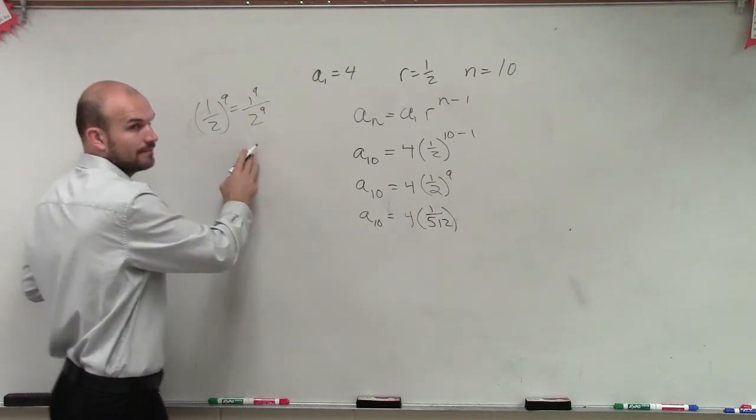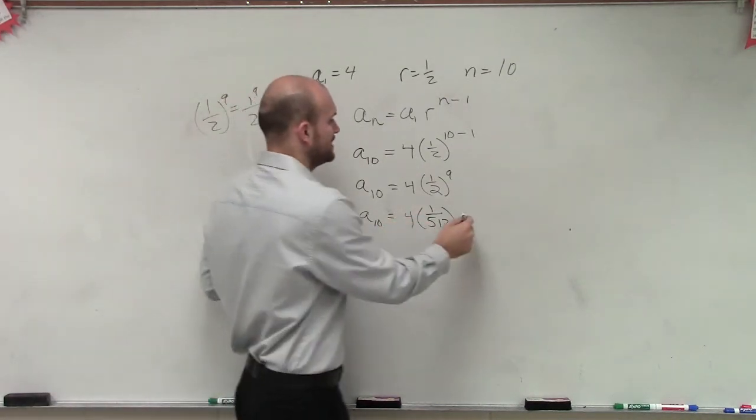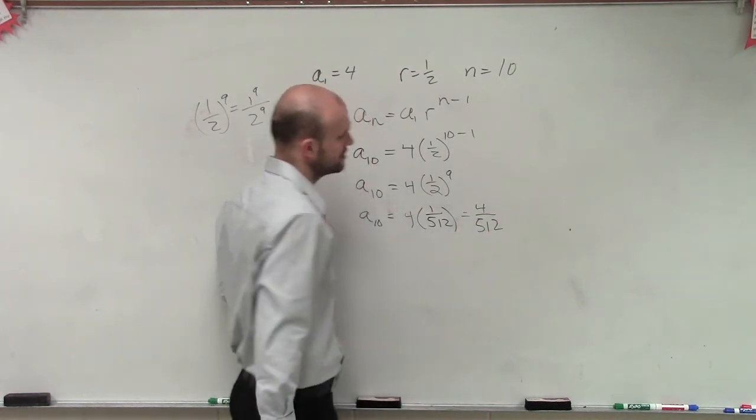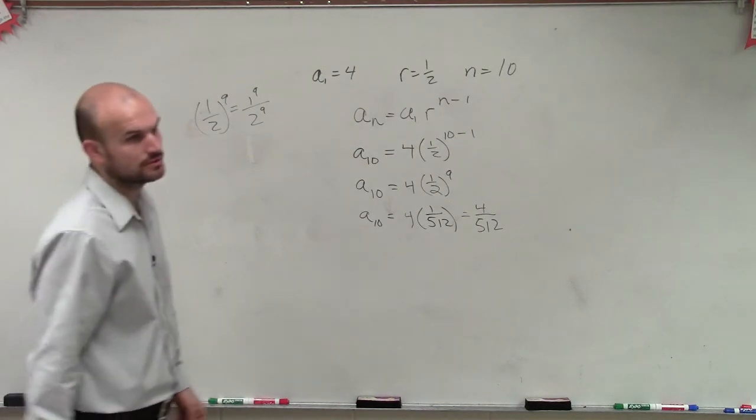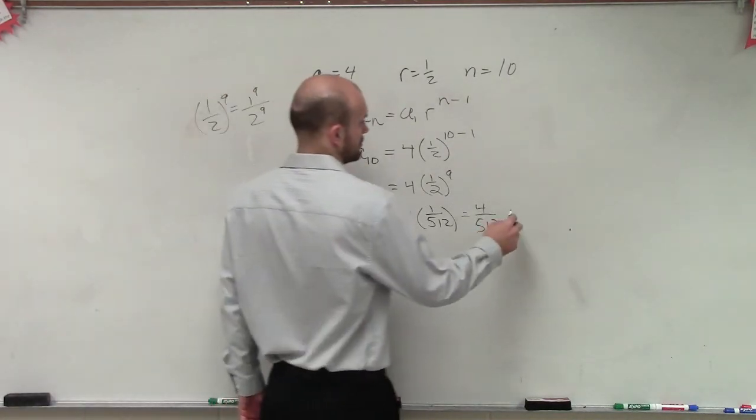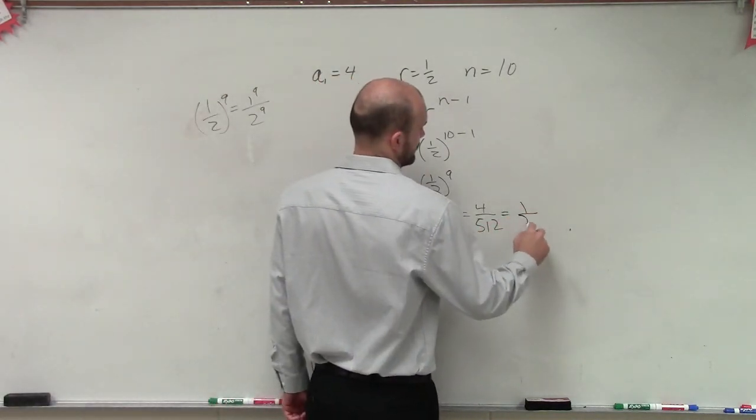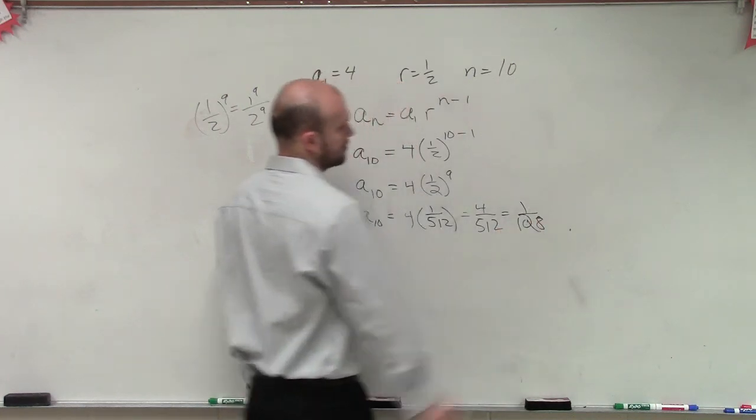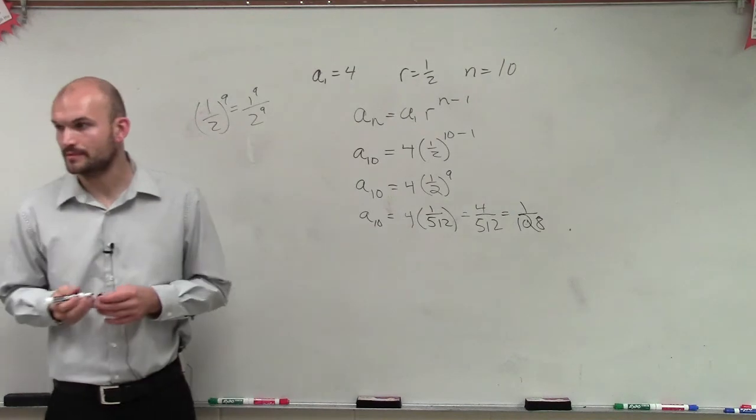OK? So then that equals 4 over 512, which we can reduce down to 1 over 128. There you go.